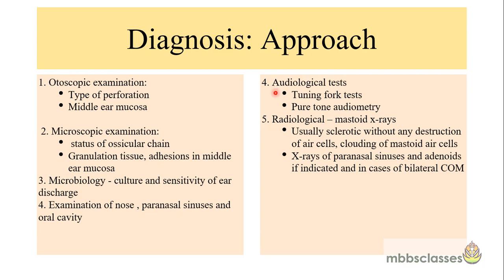For audiological tests, the first basic test is the tuning fork test to determine the type and degree of hearing loss. Next, pure tone audiometry must be done. Radiologically, especially in cases of persistent mucosal disease, mastoid X-ray is advised — it is usually sclerotic without any bony destructions and shows clouding of mastoid air cells. In patients with nasal or oral symptoms, X-rays of paranasal sinuses and adenoids may be advised, especially in bilateral COM.